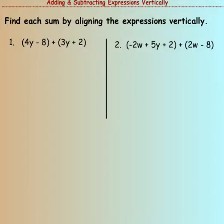Find each sum by aligning the expressions vertically. For the first one, we want to take the parentheses out, so we can do that by distributing a one. When we distribute that one, we will get 4y minus 8.